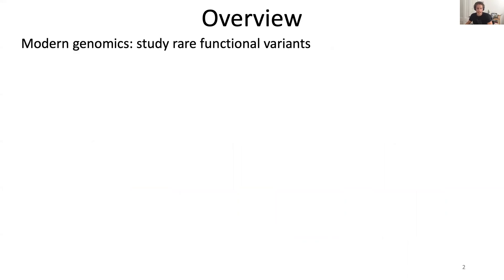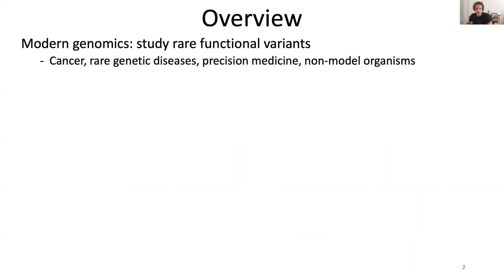Modern datasets provide extremely fine-grained details about individual genomic sequences. We can now investigate and understand the role and behavior of rare functional genomic variants. These variants are of extreme interest and importance for the development of cancer, the understanding of rare genetic diseases, as well as for the study of non-modal organisms. The setup I'm going to consider is the common one in which we have already collected and have access to a pilot study, and we are interested in understanding how to optimally design a future study under a fixed budget.